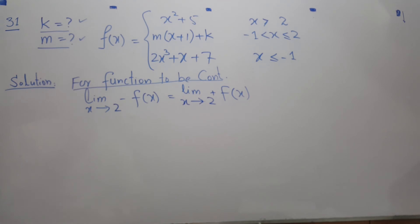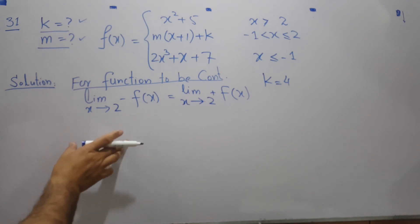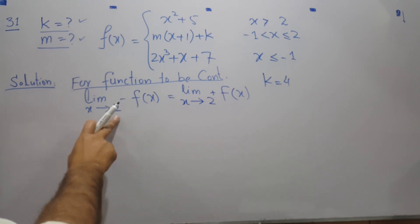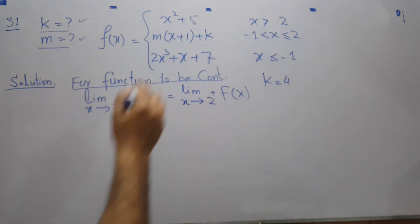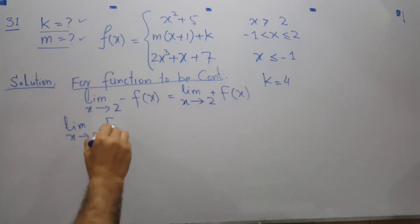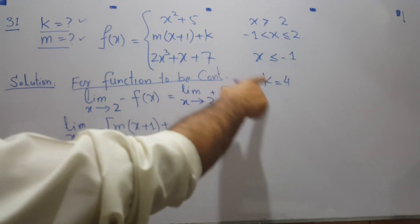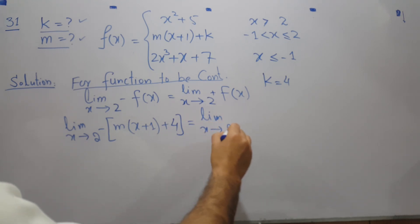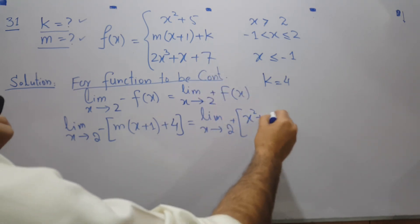Now to find m, we know k equals 4. We use the continuity condition at x equals 2: on the right side of 2 the function is x squared plus 5, and on the left side the function is m times x plus 1 plus k. Setting the limit as x approaches 2 from the left equal to the limit from the right, with k substituted as 4.